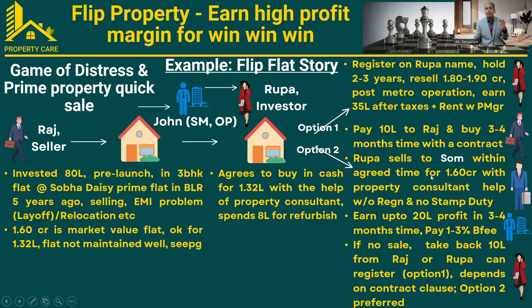The consultant helps do the registration in SOAM's name. Rupa is just flipping the property from Raj to SOAM — that is all she does as an investor, and she earns 20 lakhs on this deal. If the sale is not happening, same as option one, she will register it in her name and sell it later. The key thing is that the contract with Raj has to be clearly articulated — what is the exit strategy. For example, within three to four months, if a sale is not possible, some owners may say they will return eight lakhs out of the ten lakhs. So the contract should clearly state the exit strategy, and if she is able to flip the property, she earns 20 lakhs in three to four months. That is the idea behind this concept.